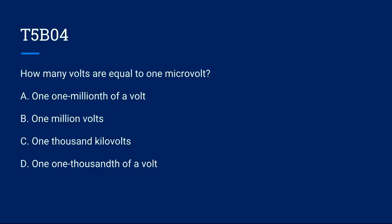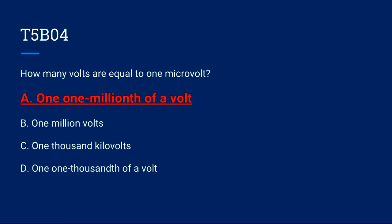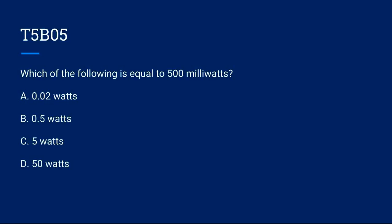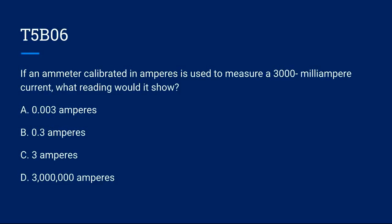T5B04, how many volts are equal to 1 microvolt? A. 1,000,000th of a volt. B. 1,000,000 volts. C. 1,000 kilovolts. Or D. 1,000,000th of a volt. The correct answer is A. 1,000,000th of a volt. T5B05, which of the following is equal to 500 milliwatts? A. 0.02 watts. B. 0.5 watts. C. 5 watts. Or D. 50 watts. The correct answer is B. 0.5 watts.